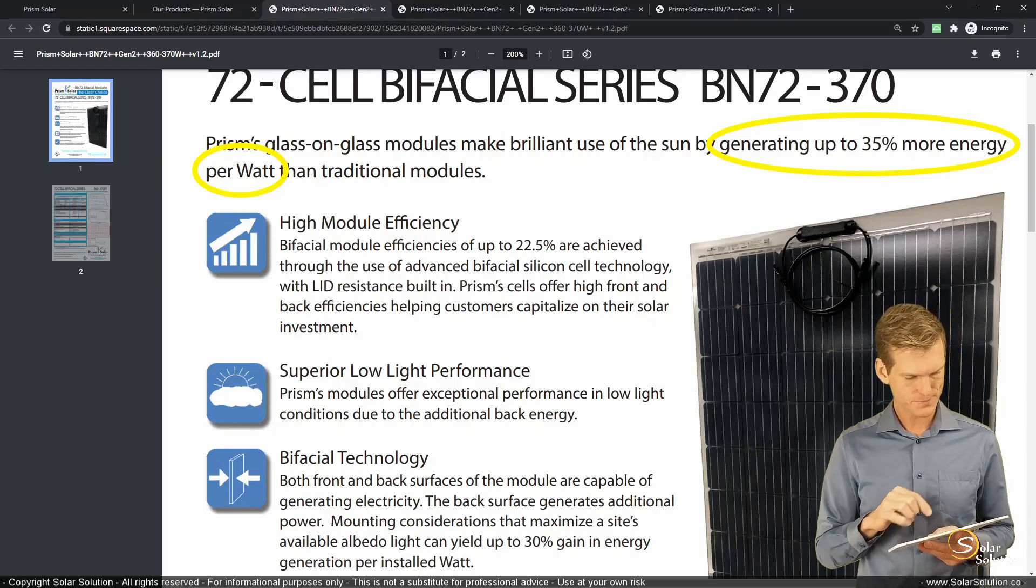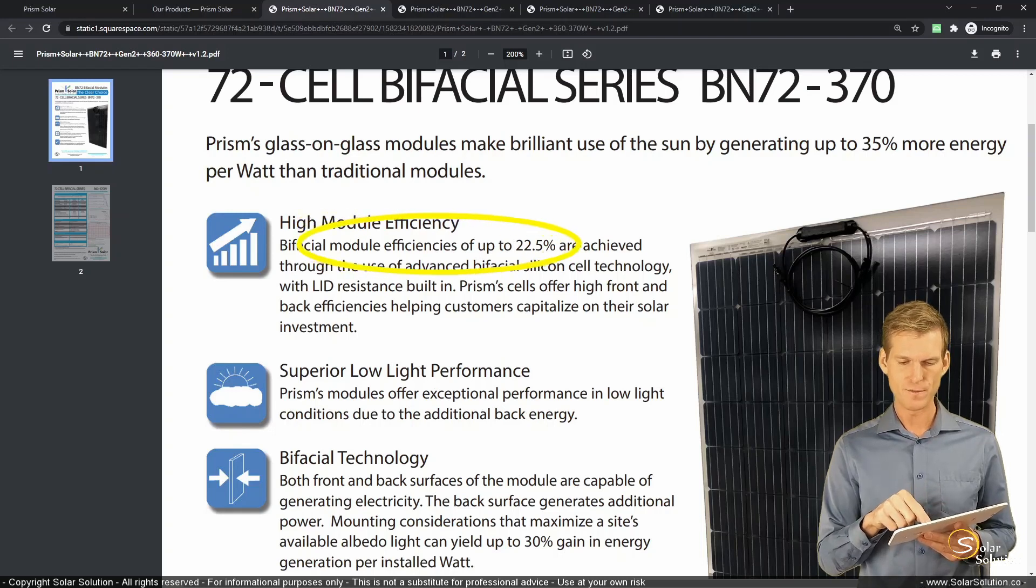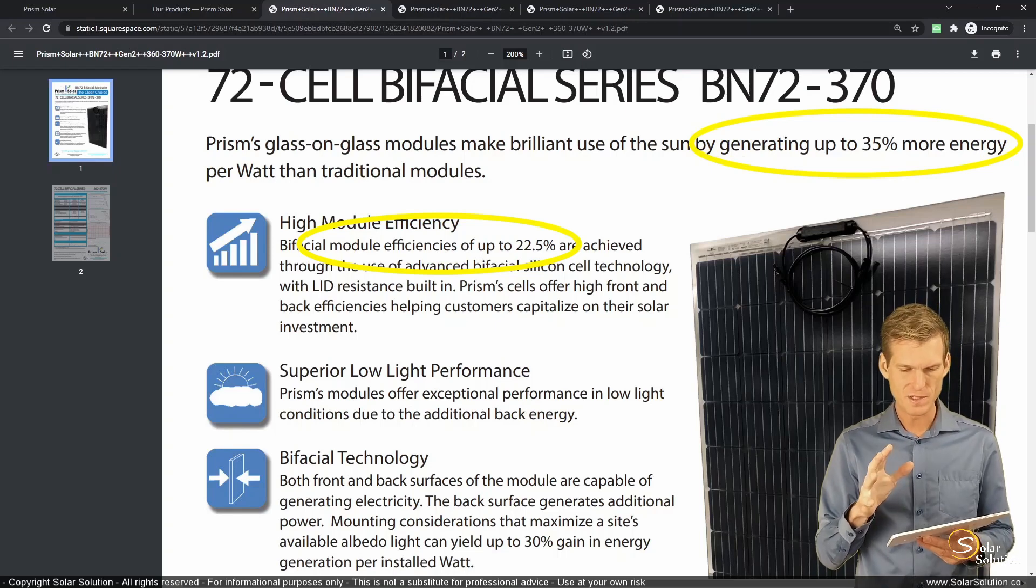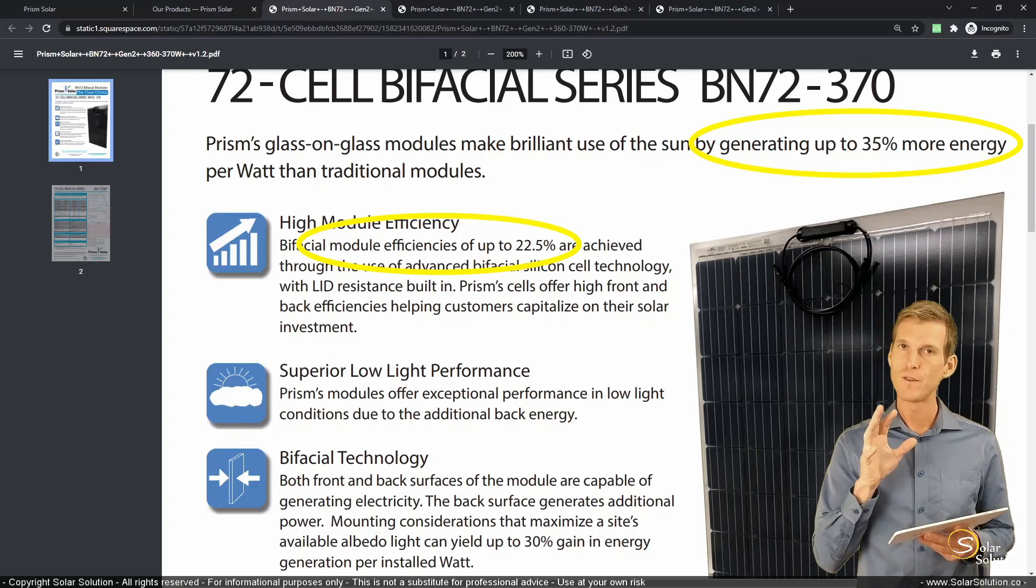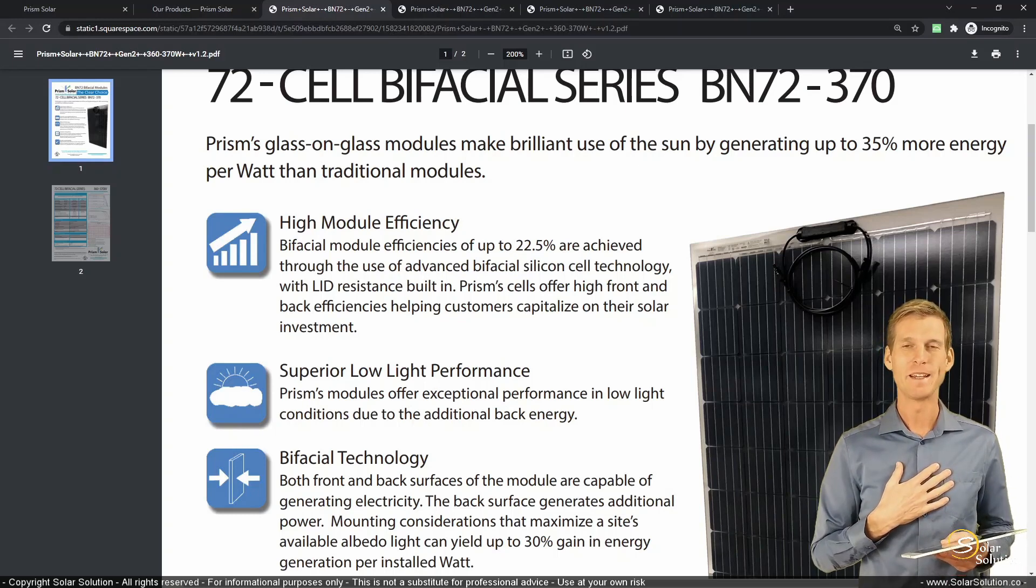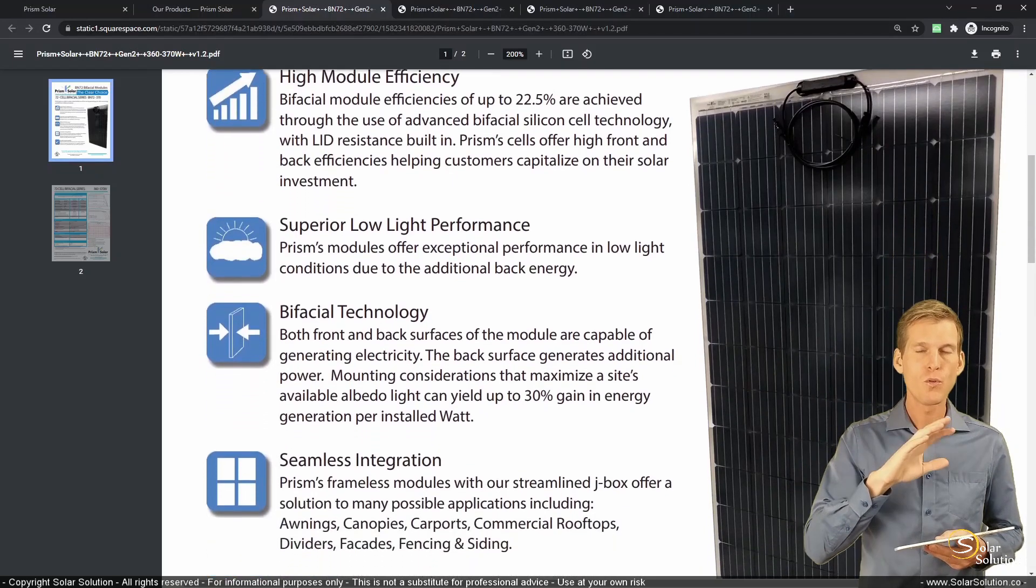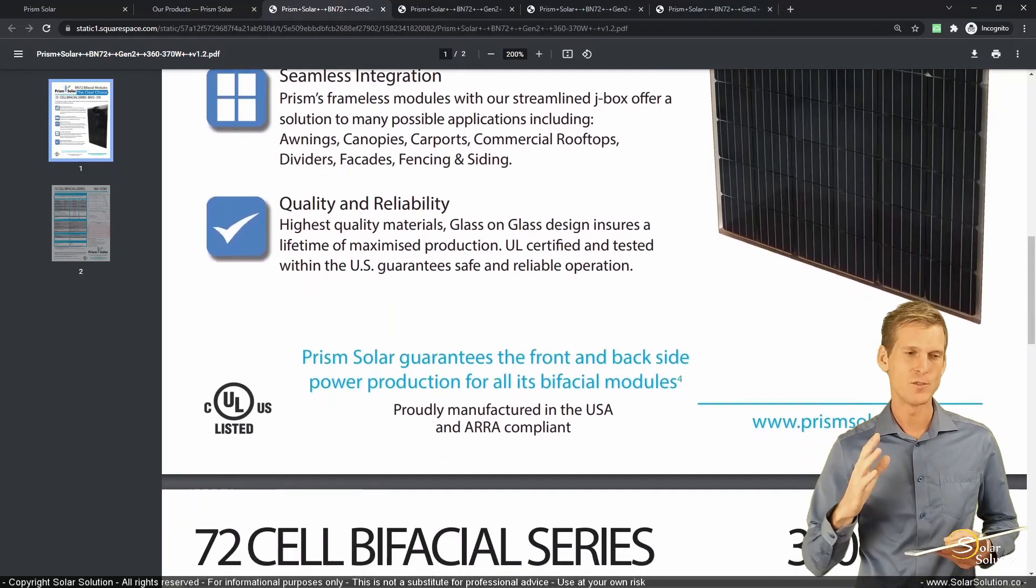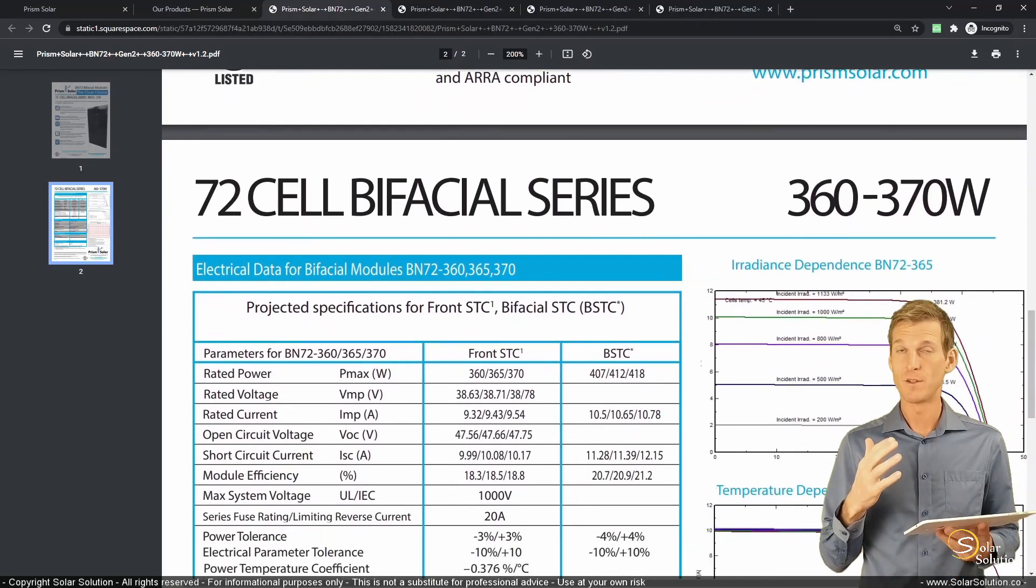So here we are in the specification sheet, and it says clearly bifacial modules. It's a module of 72 photovoltaic cells combined in series. And they claim that they can generate up to 35% more energy per watt. I think they're referring to generating up to 35% more energy per watt of solar irradiation hitting the panel. Because a little bit lower here, they say that they can get module efficiencies up to 22.5%. So the first value I think refers to that they generate up to 35% more energy per watt of solar irradiation that's hitting the panel. So they're squeezing more electrical energy out of the solar power. And then they can get up to 22.5% of the module efficiency, not the cell efficiency, but the module efficiency.